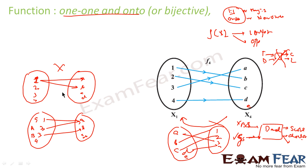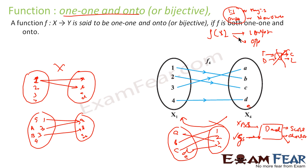That is the only reason why we study one-to-one onto functions — because they have the special property of being invertible. A function from X to Y is said to be bijective if it is both one-to-one and onto.